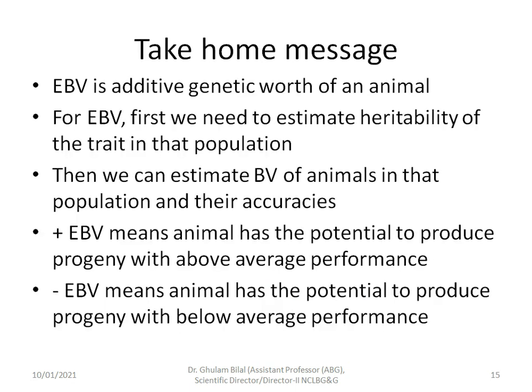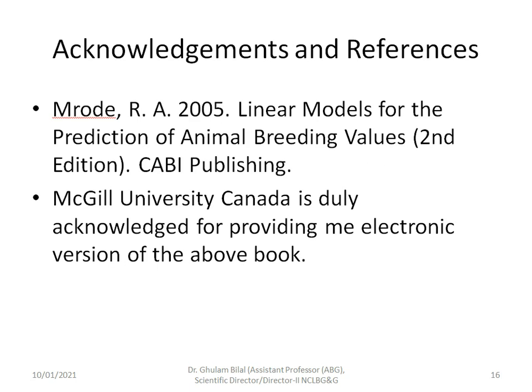Take-home messages: EBV is the additive genetic worth of an animal. First, estimate heritability of the trait in the population; then estimate breeding values and their accuracies. A positive EBV means the animal has potential to produce progeny with above-average performance; a negative EBV means below-average progeny performance; and an EBV of 0 means equal to the population average.